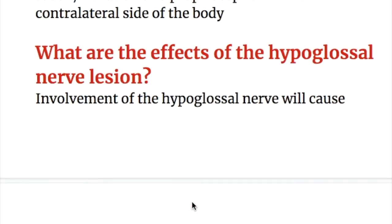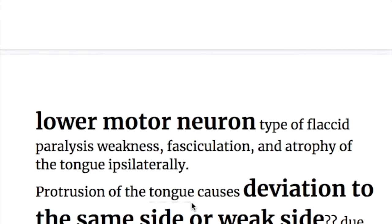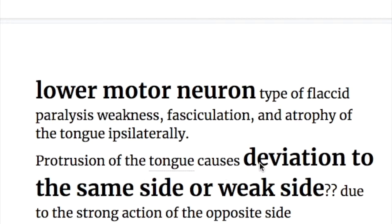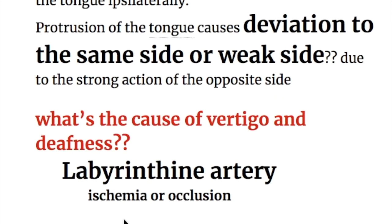Involvement of the hypoglossal nerve causes a lower motor neuron type of flaccid paralysis, with weakness, fasciculation, and atrophy of the tongue ipsilaterally. Protrusion of the tongue causes deviation to the same side — the weak side — due to the strong action of the opposite side. There is no facial abnormality in medial medullary syndrome.